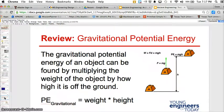The gravitational potential energy of an object can be found by multiplying the weight of the object by how high it is off the ground. We looked at this weeks ago at the topic of catapults and we dug into this a little bit.